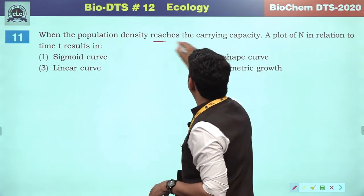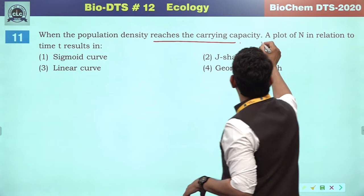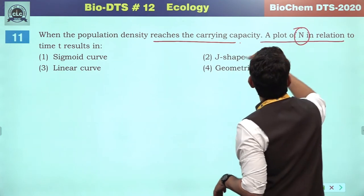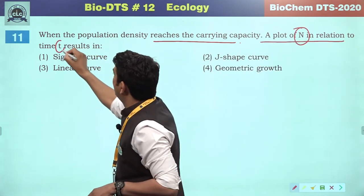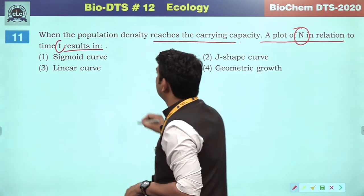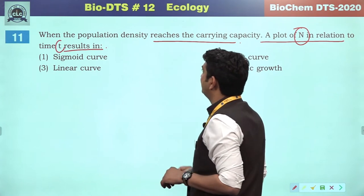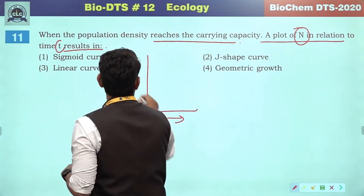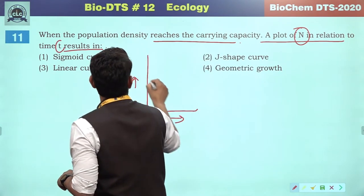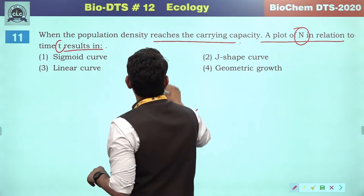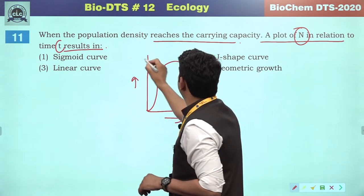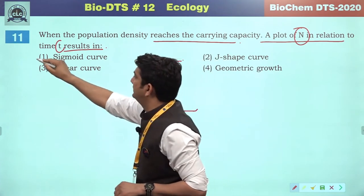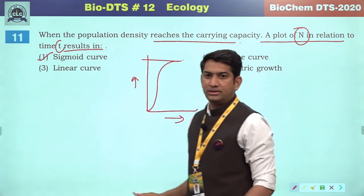When the population density reaches the carrying capacity, a plot of N in relation to time T — the population density approaches the carrying capacity — the plot will be the sigmoidal curve.